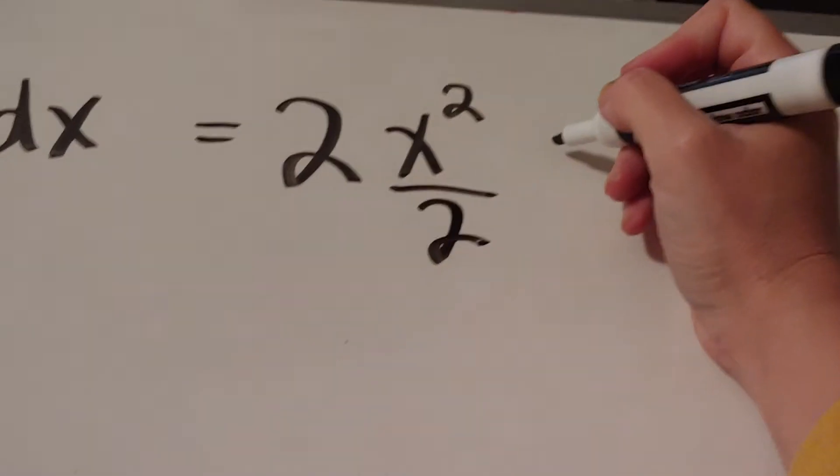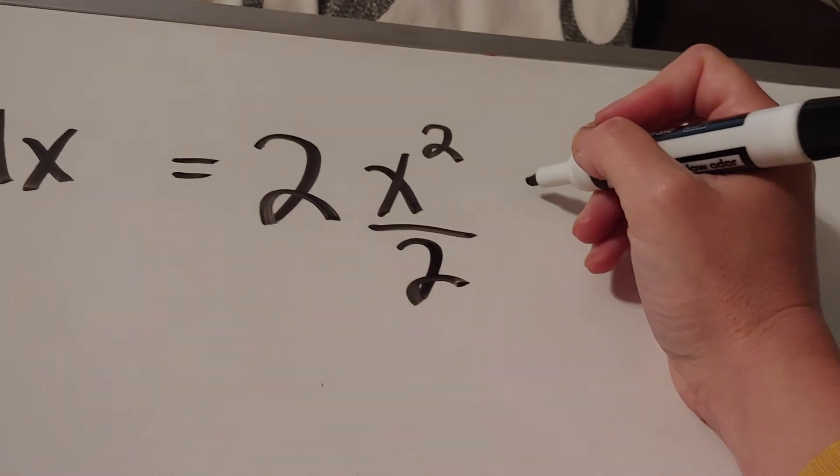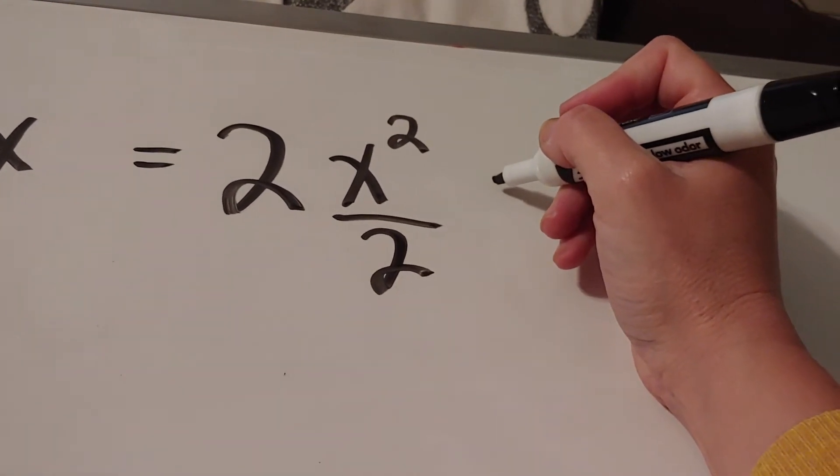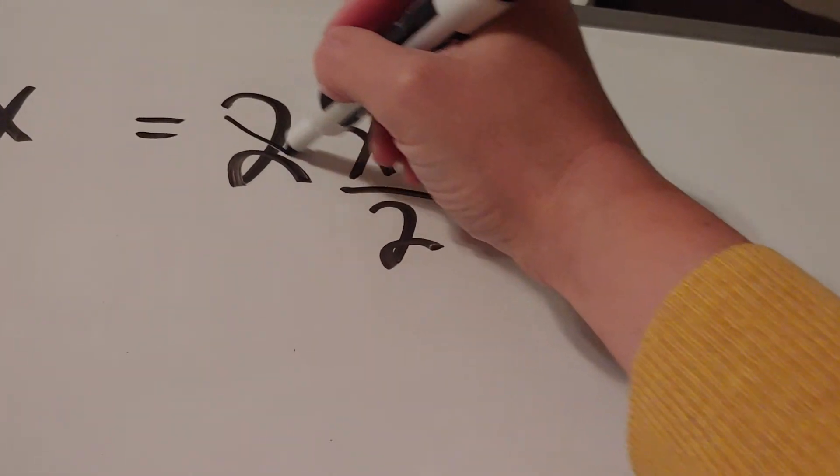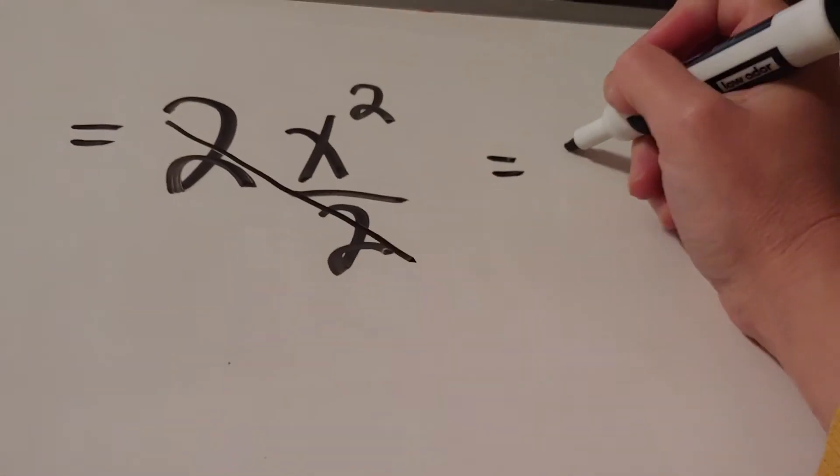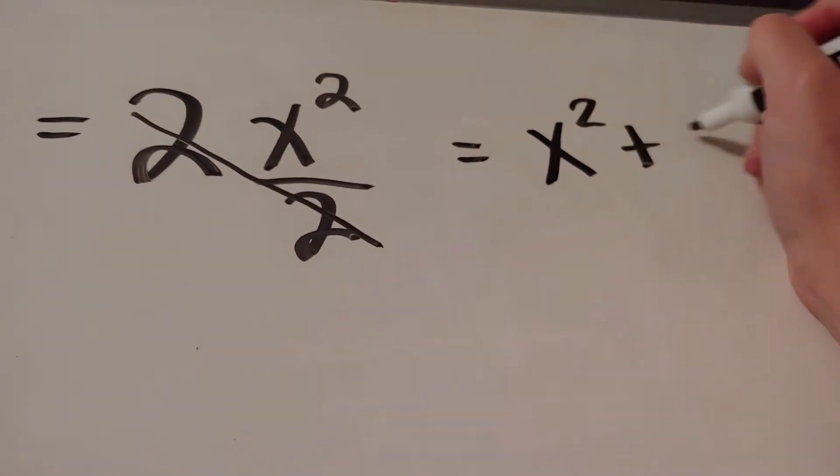Now, what's going to happen is you can see I'm hesitating writing a plus c, so typically what I do is I don't write a plus c until I've cleaned up my answer, because that way I know that I'm done. Here the 2's will cancel, so my final answer would be x squared plus c.